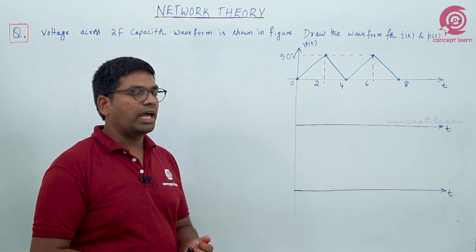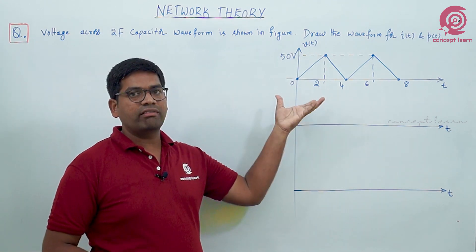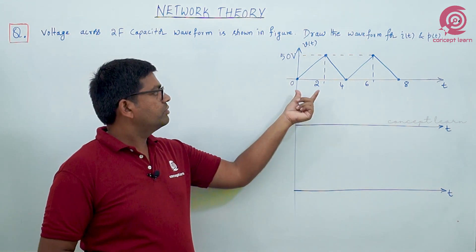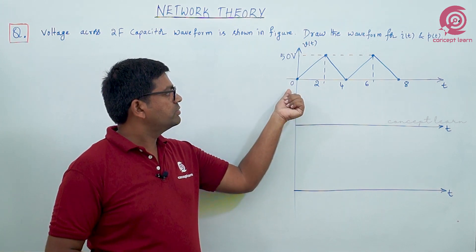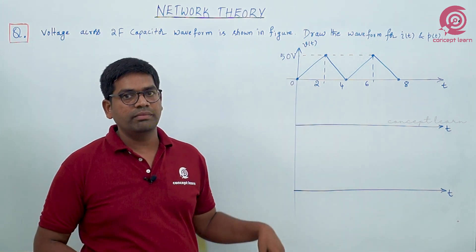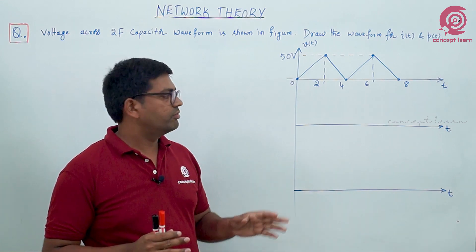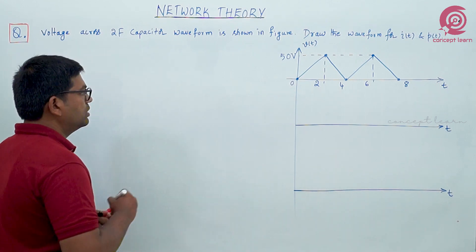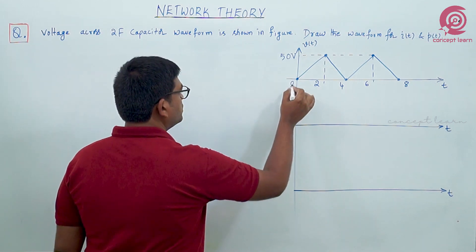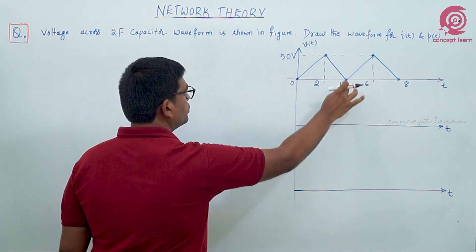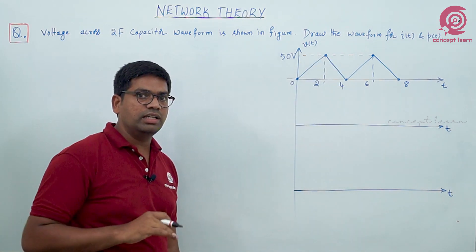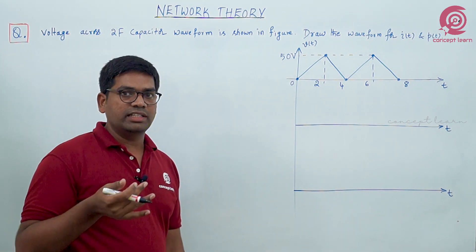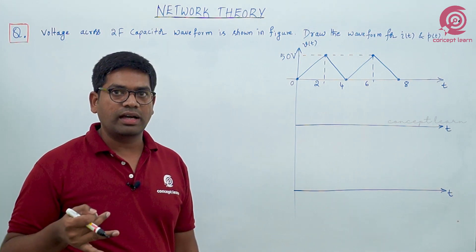Looking at the time period: from 0 to 4 whatever the behavior is, it repeats again from 4 to 8, 8 to 12, and so on. So we calculate the things from 0 to 4 only, then repeat the same waveform pattern for current and power. Observing the waveform, from 0 to 2 one nature is there and from 2 to 4 another nature — it is a triangular waveform. So a triangular waveform is given as voltage to the capacitor.